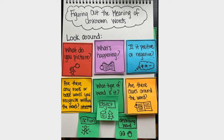The first thing that you need to do when you come across a word that you're not sure of what the meaning is, is you need to stop and pause. If you keep reading, you might not understand what comes next if you don't really clarify what that unknown word means to you. So I always say stop first and look around.